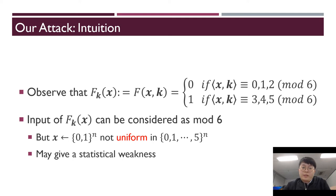Our intuition is very simple. We observe that for weak PRF, if the inner product of input x and secret key k is 0, 1, 2 modulo 6, then weak PRF produces 0. Also, if the inner product x and k is 3, 4, 5 modulo 6, then weak PRF produces 1. We think that the input of weak PRF can be considered as modulo 6. But x is uniformly chosen n-bit, not uniform in Z_6 space. Then it may give statistical weakness.